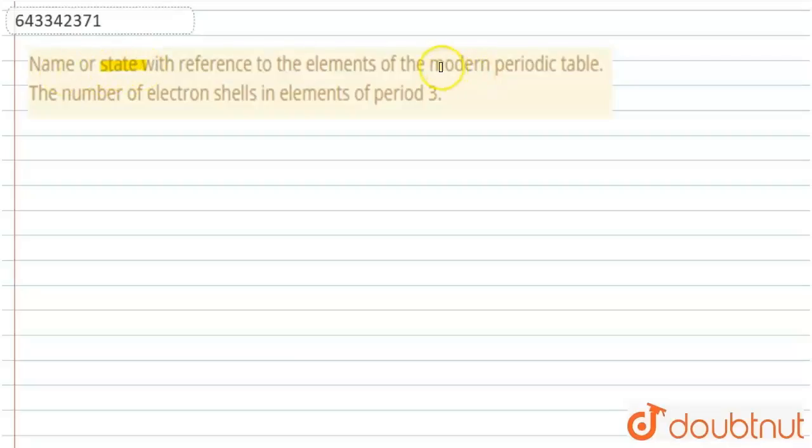Name or state with reference to the elements of the modern periodic table the number of electrons that present in elements of period 3.